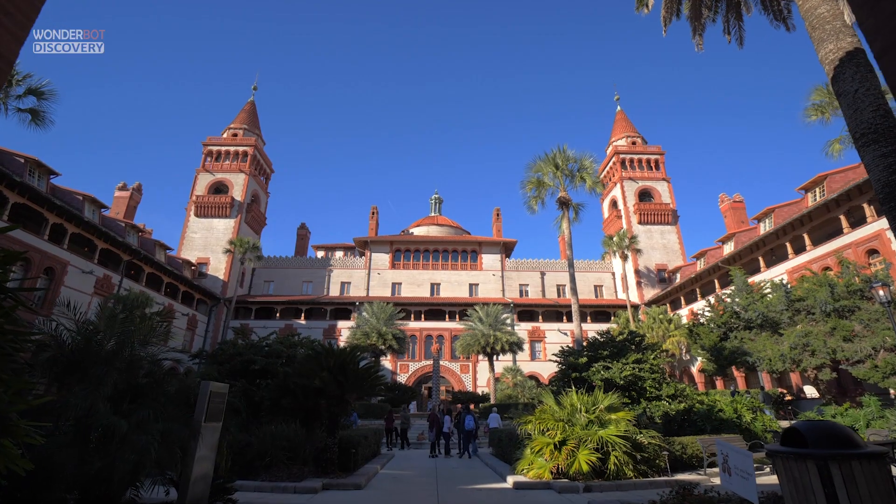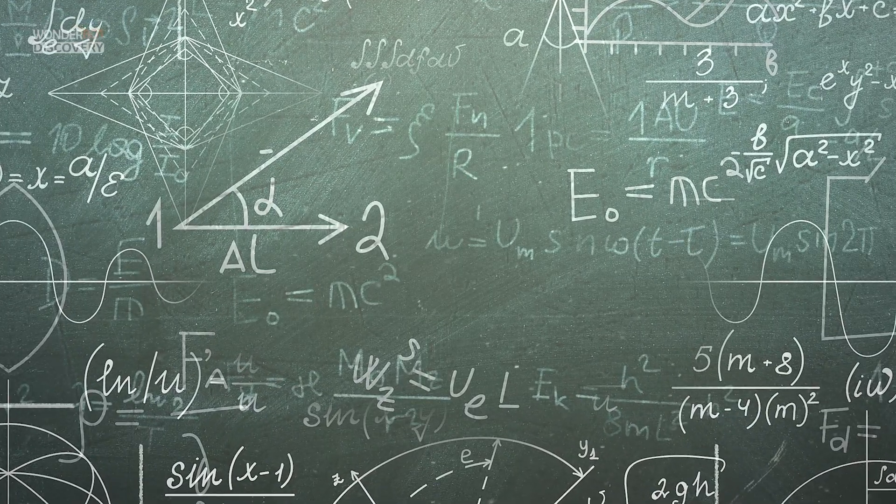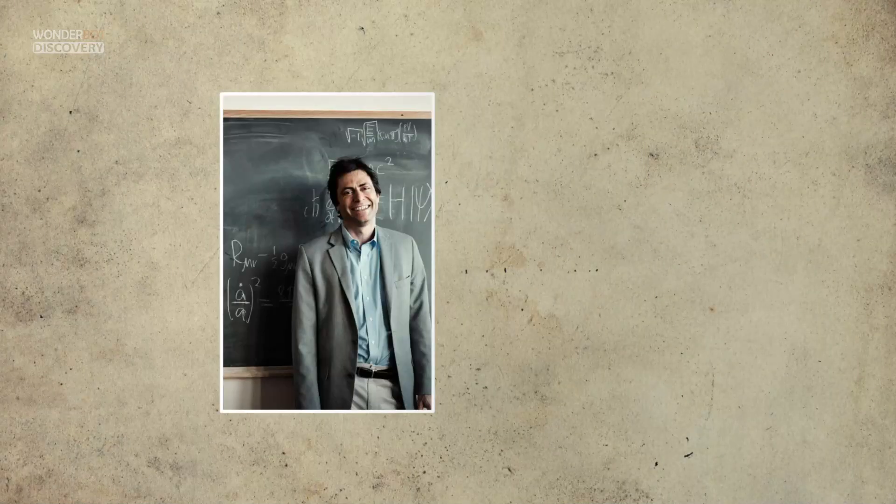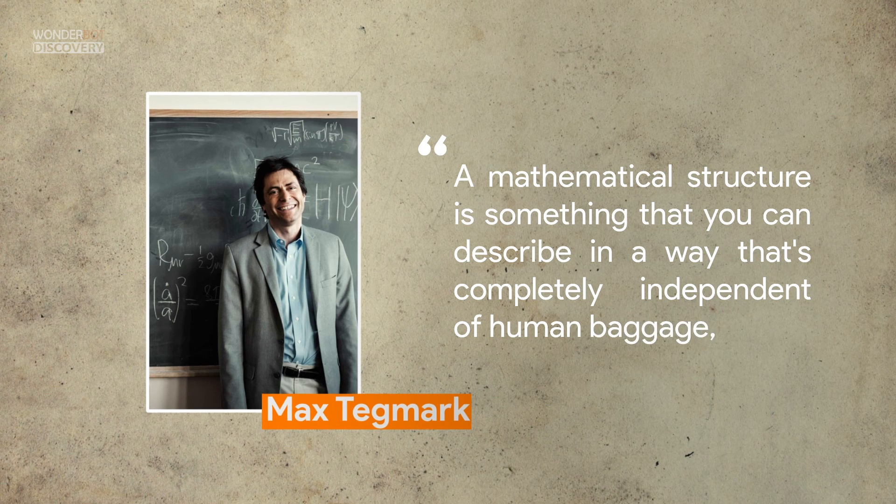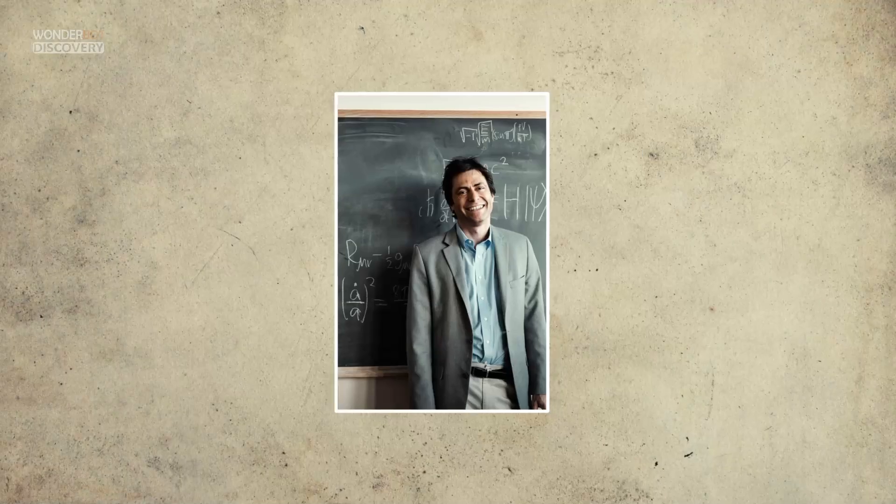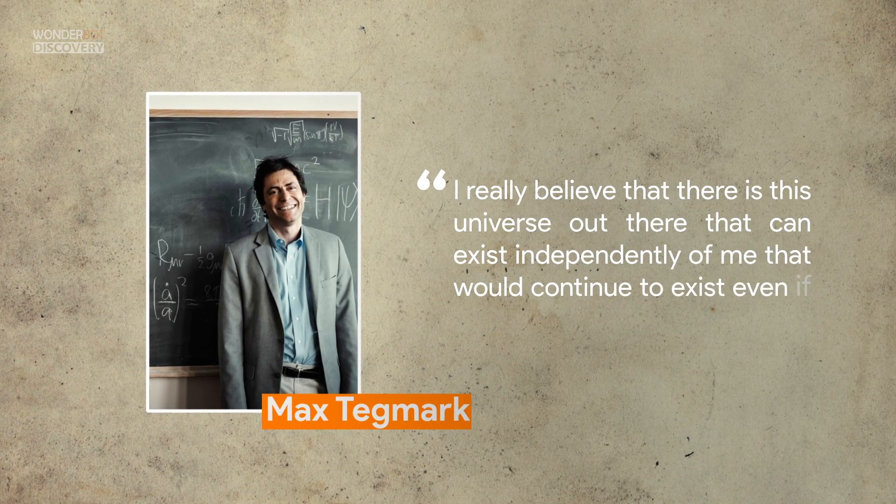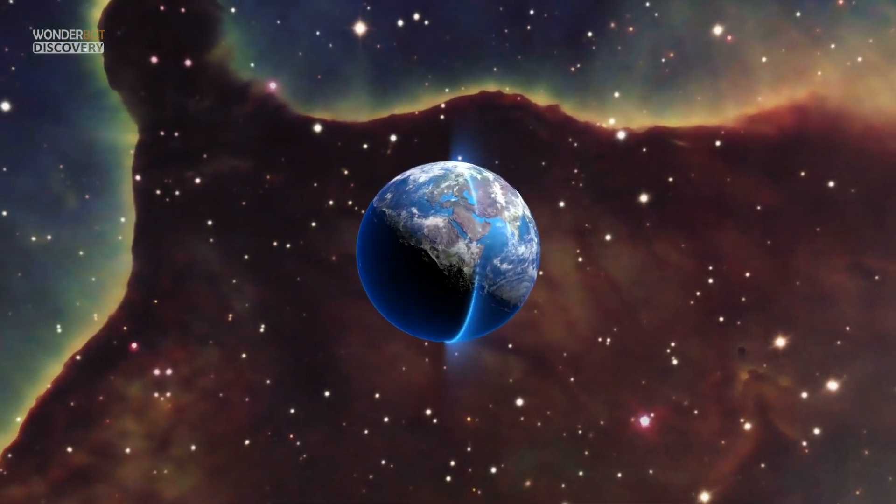Four: Mathematical Universes. Another possible avenue is exploring mathematical universes, which explains that the structure of mathematics may change depending on which universe you reside. A mathematical structure is something that you can describe in a way that's completely independent of human baggage, said theory proposer Max Tegmark of the Massachusetts Institute of Technology. I really believe that there is this universe out there that can exist independently of me that would continue to exist even if there were no humans.